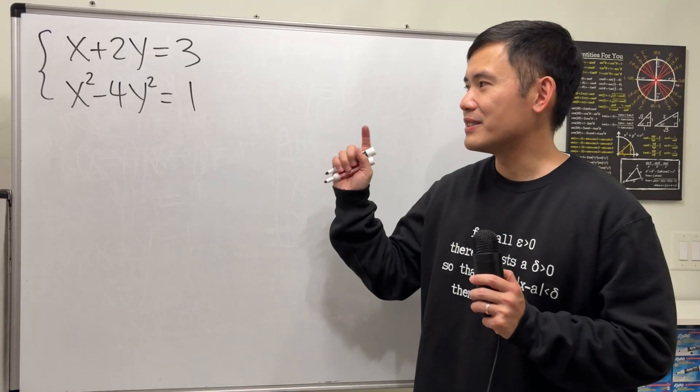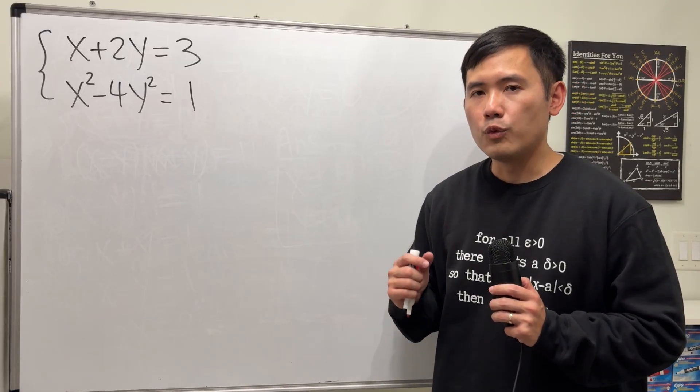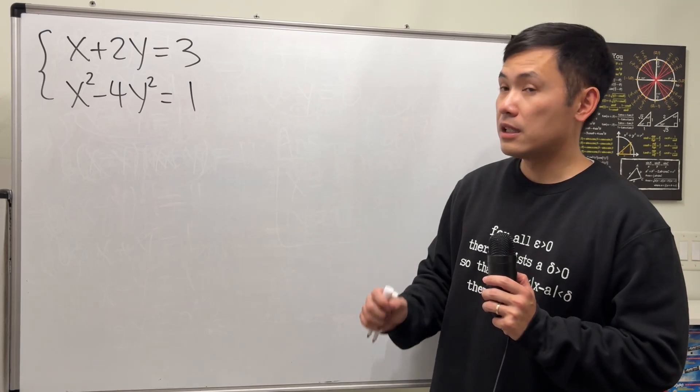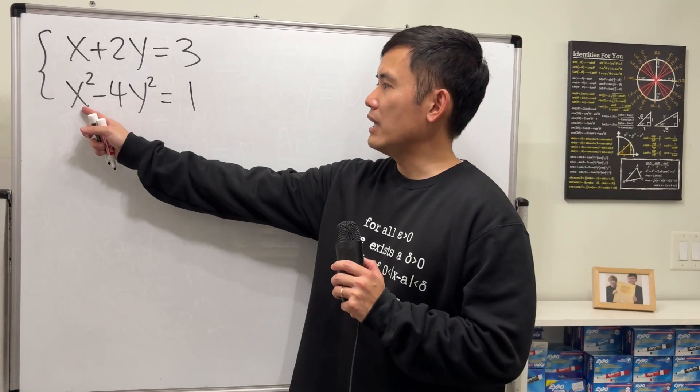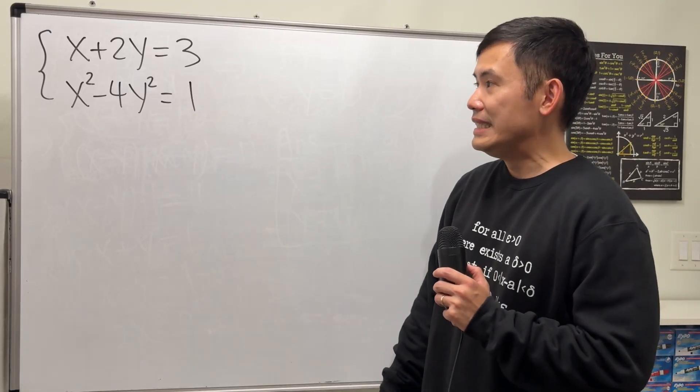If you say factoring, then yes, you are correct. And by the way, this is an example of what we call a nonlinear system of equations because we have x squared, y squared from the second one. So it's not typical linear equations.